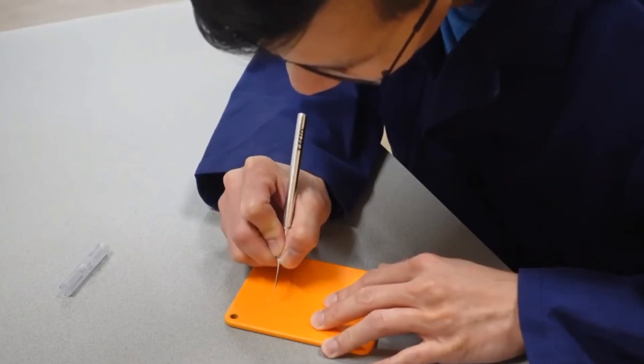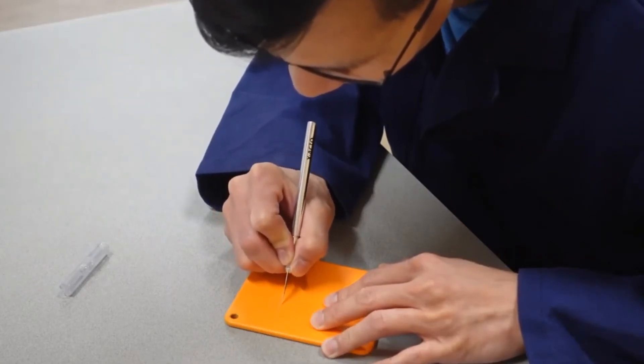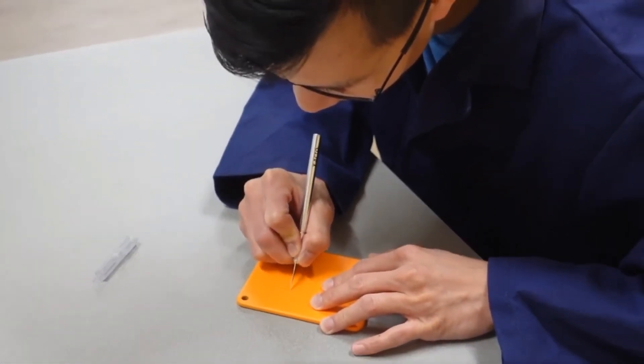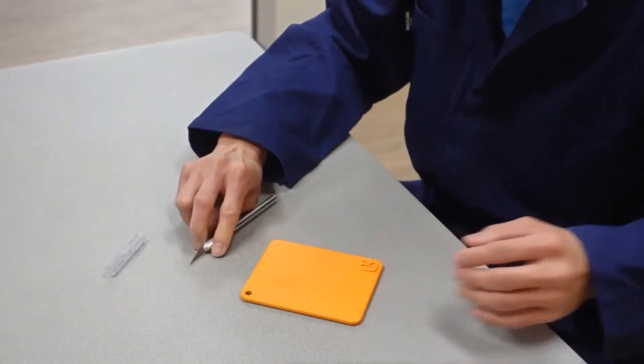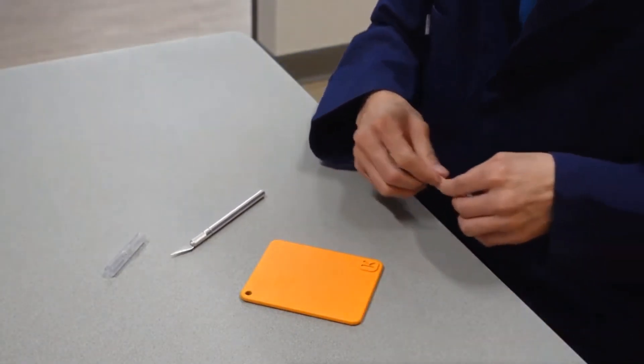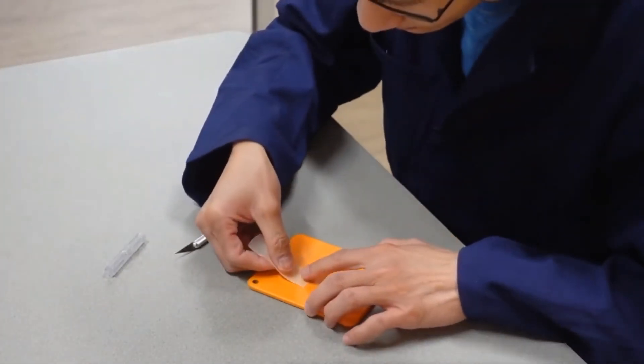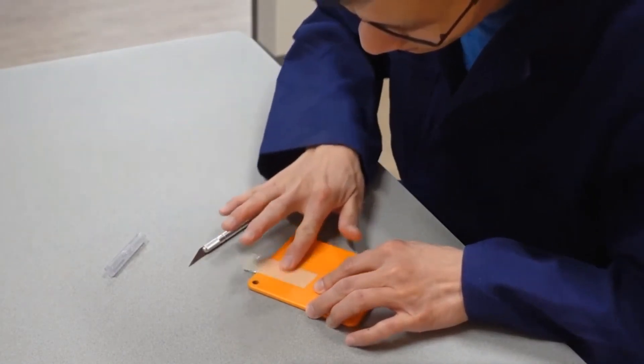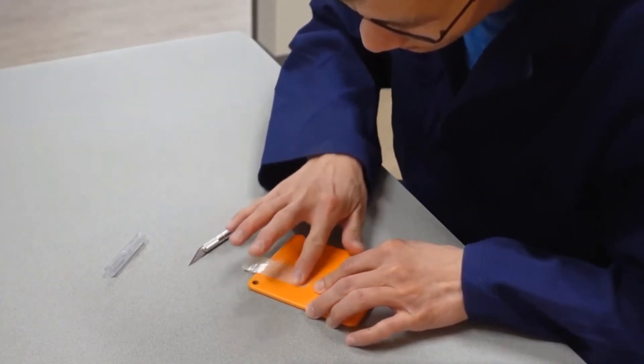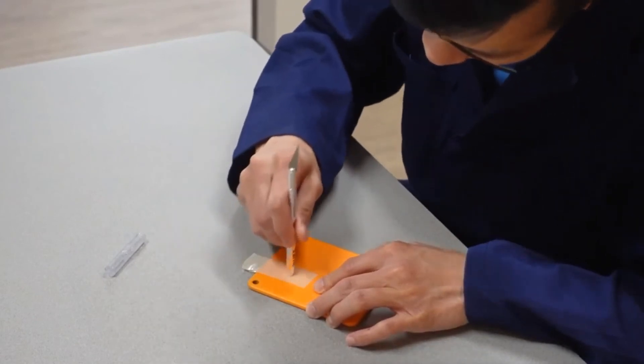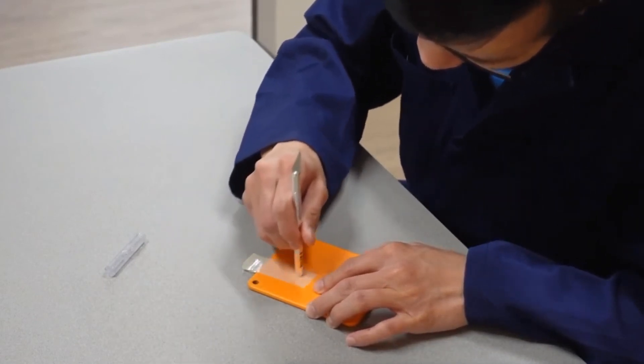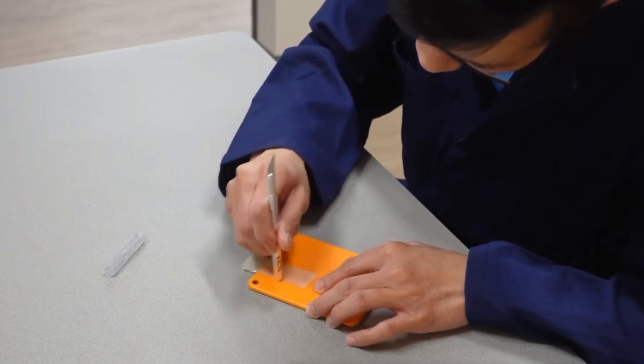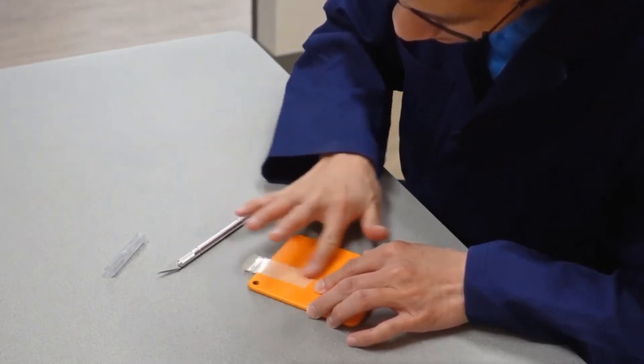ASTM-D 3359 is a standard and accepted test method used to measure and classify adhesion of a coating material to a substrate. The coating is cross-cut scribed at specified spacing using a knife. Pressure-sensitive tape is then applied over the scribed area and pulled off sharply. Adhesion is classified by the percentage of coating removed by the tape from the substrate.